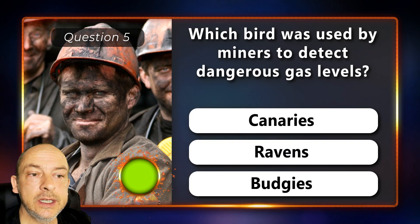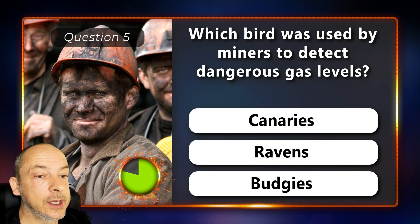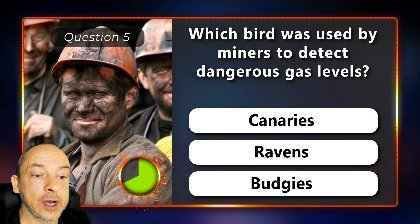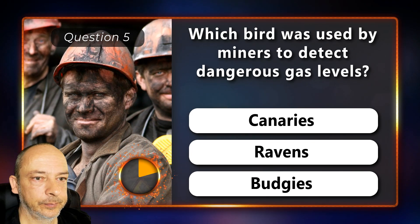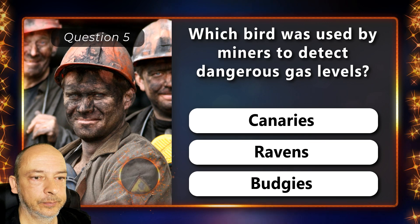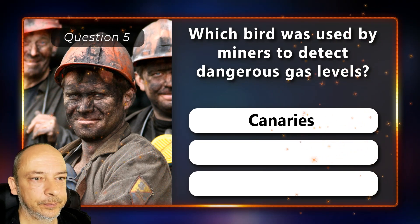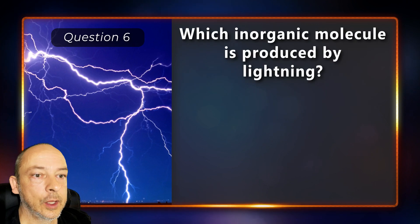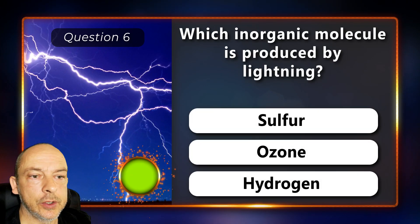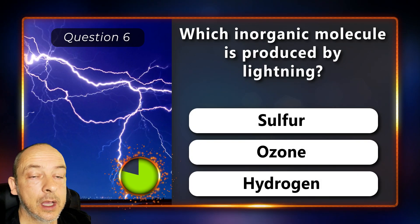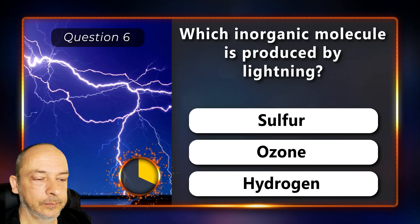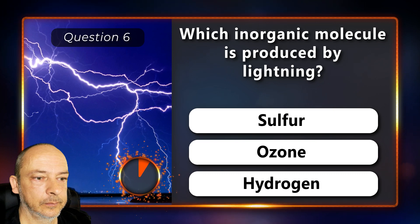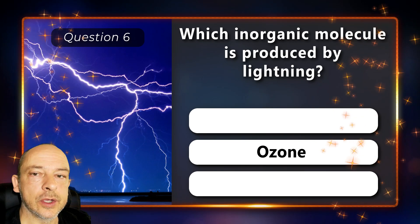Which bird was used by miners to detect dangerous gas levels — canaries, ravens, or budgies? Canaries. Which inorganic molecule is produced by lightning — is it sulfur, ozone, or hydrogen? Ozone.